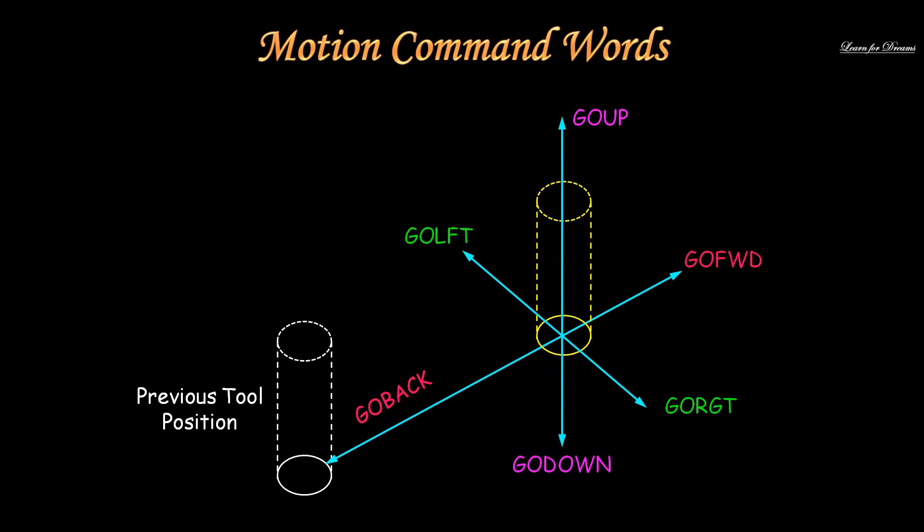Now let's see which are the words used for motion command. When tool moves forward we use word GOFWD. When tool moves backward we use word GOBACK. If a tool is moving upward, the word used is GOUP, and if moving downward, then GODOWN. When tool moves to the left side we use GOLFT, and when tool moves to the right side we use GORGT.